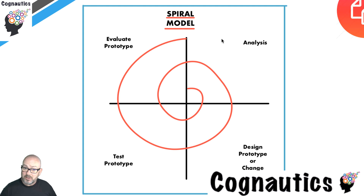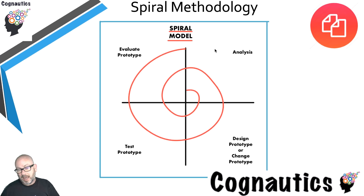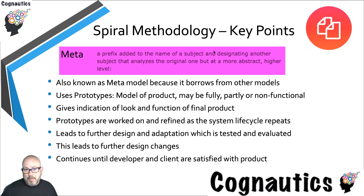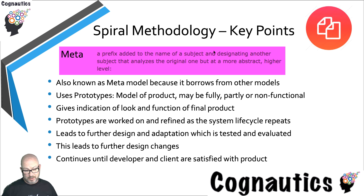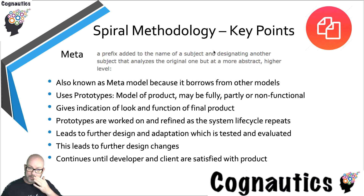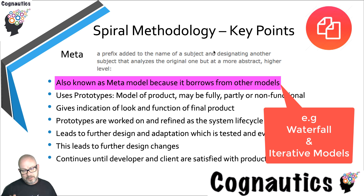It has certain advantages, certain disadvantages, and it works for certain types of projects. This one is probably more complex than the others we've looked at so far. It's known as a meta model — 'meta' means above. For example, metadata for an image might include where it was recorded, the number of megapixels, the file size, and so on. So a meta model is like a view from above, borrowing from other models: the iterative model and the waterfall model.